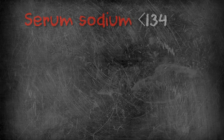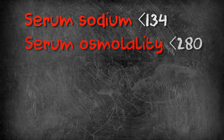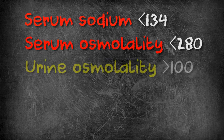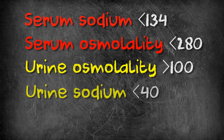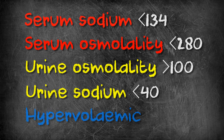To recap, you've got a patient with hyponatremia — low sodium — with a low serum osmolality and high urine osmolality. Urine sodium is also low and the patient appears hypervolemic, edematous.